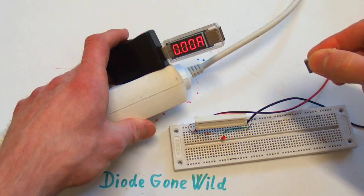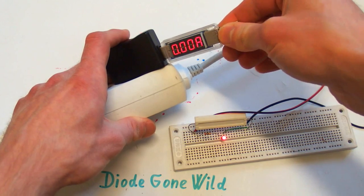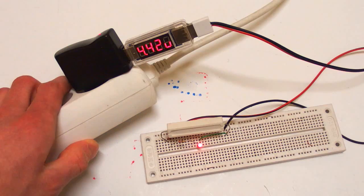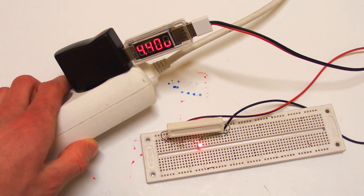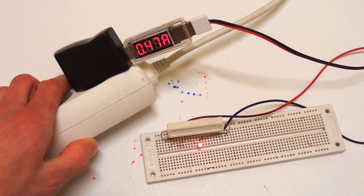So let's use a test load and load it with about half an amp and the output voltage drops to about 4.3 or 4.4 volts and this is starting to be a little bit too low for USB but still somewhat okay.